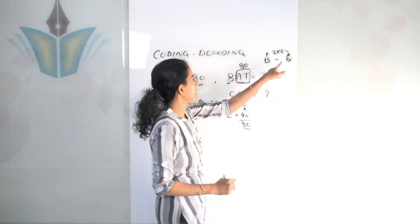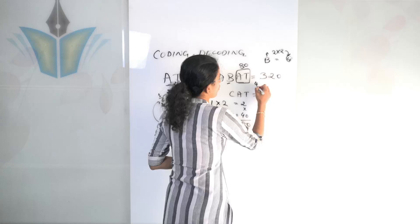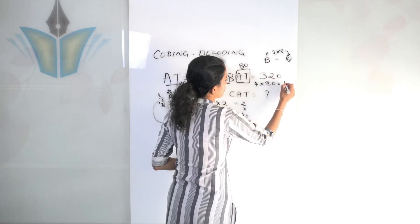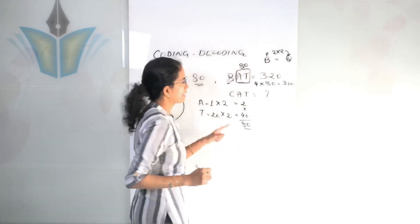This 4 what I get, I multiply with 80. So 4 into 80 would give me 320. So that comes the answer here.